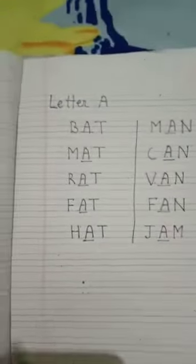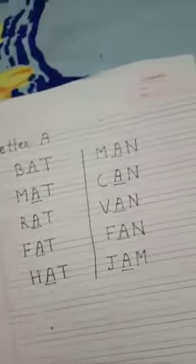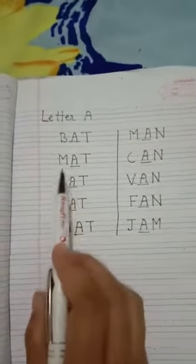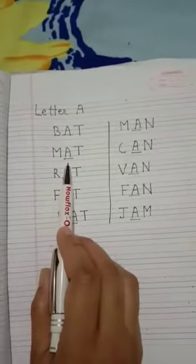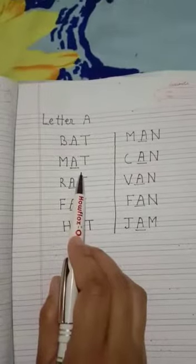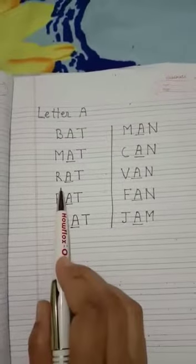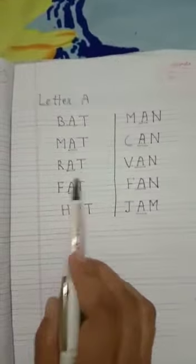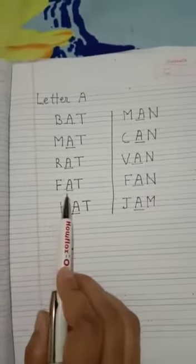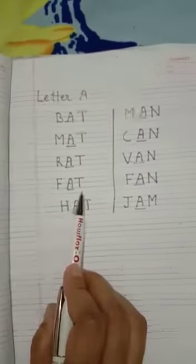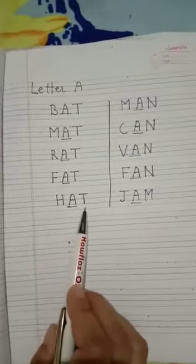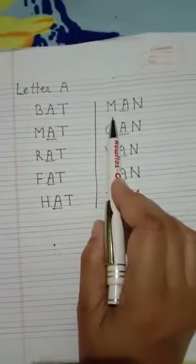Now we will repeat all this. B, A, T, bat. M, A, T, mat. R, A, T, rat. F, A, T, fat. H, A, T, hat.